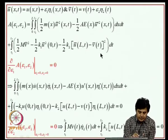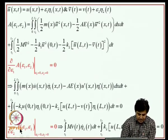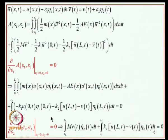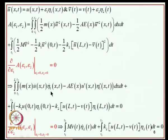The necessary conditions for the action integral to reach a stationary value are that the gradients with respect to epsilon_1 and epsilon_2 must both vanish. This stationarity condition is realized when epsilon_1 and epsilon_2 are both zero, since by definition U and V are the unknown optimal solutions. Implementing these two requirements yields two equations involving time derivatives and spatial derivatives of the variations.